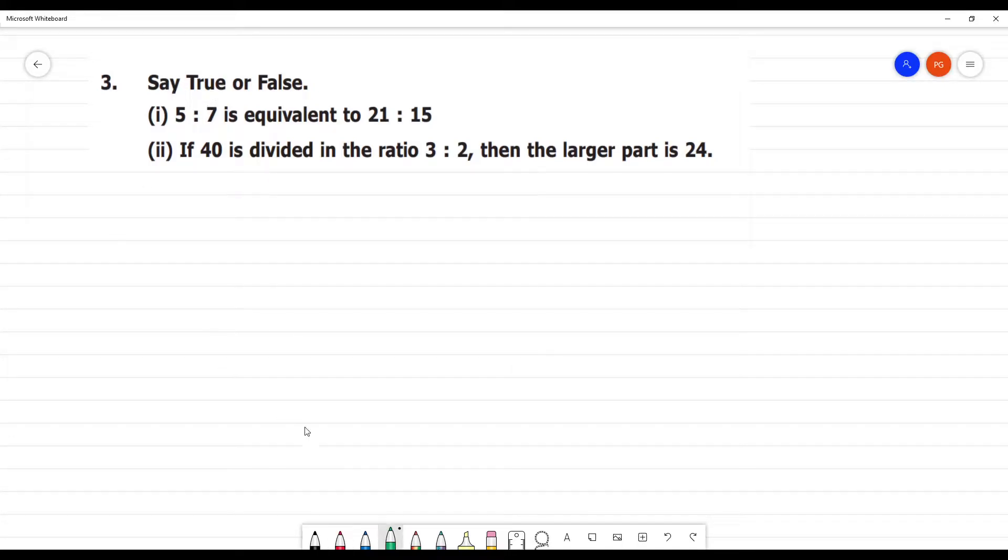Okay, two are false. First one, what do you say? 5 is to 7, this is equivalent to 21 is to 15, 21 is to 15.